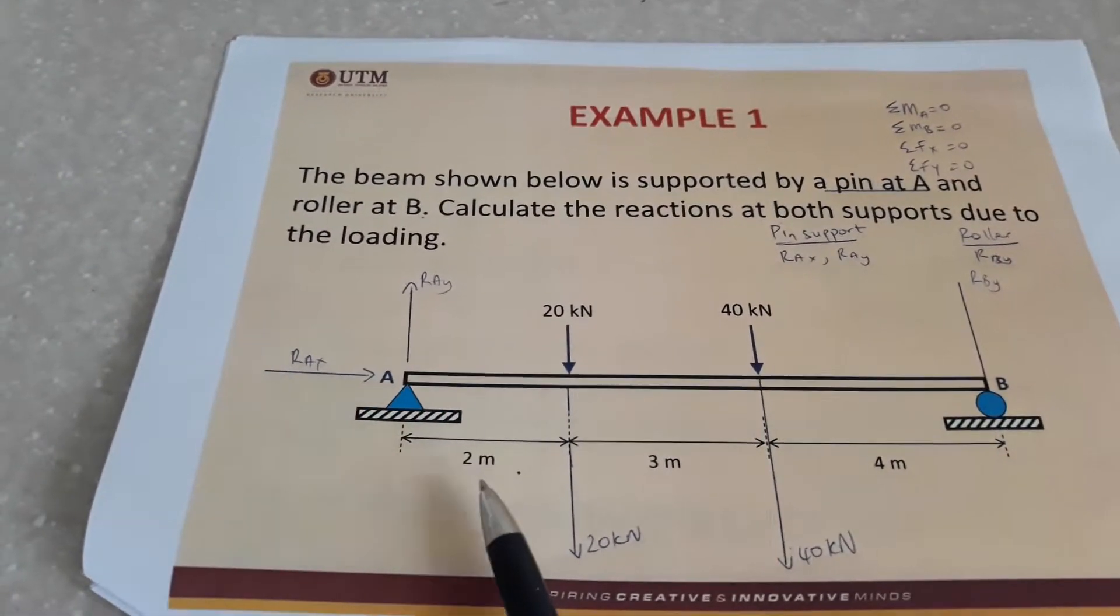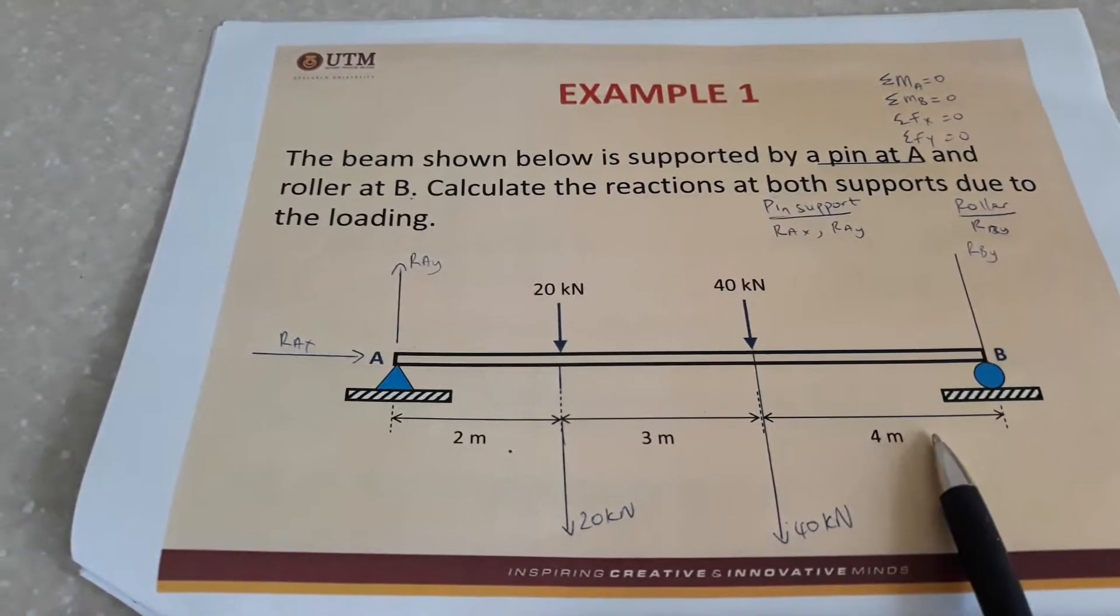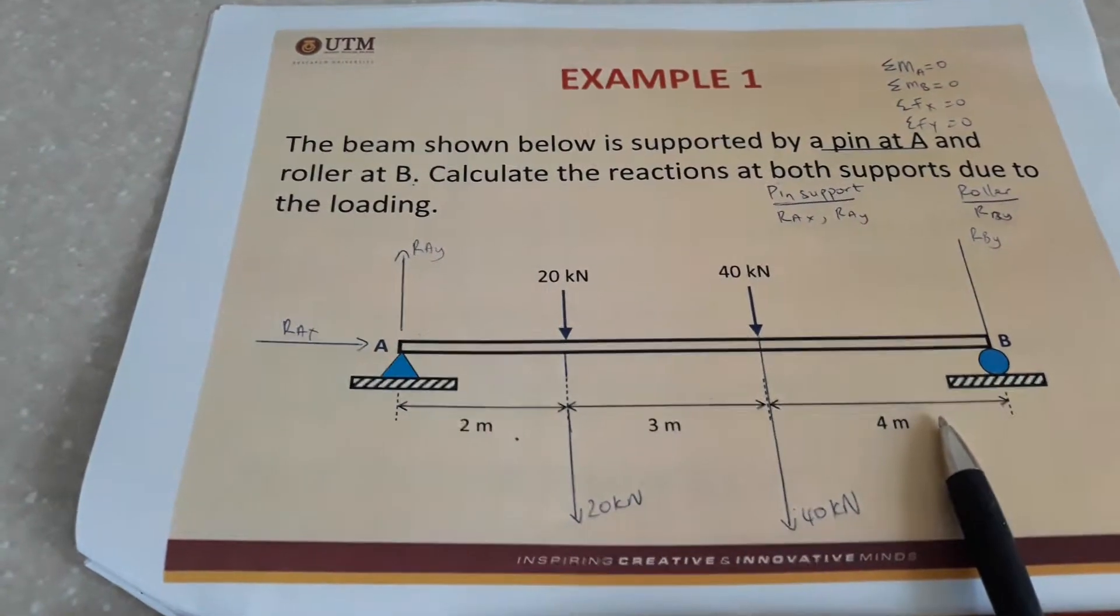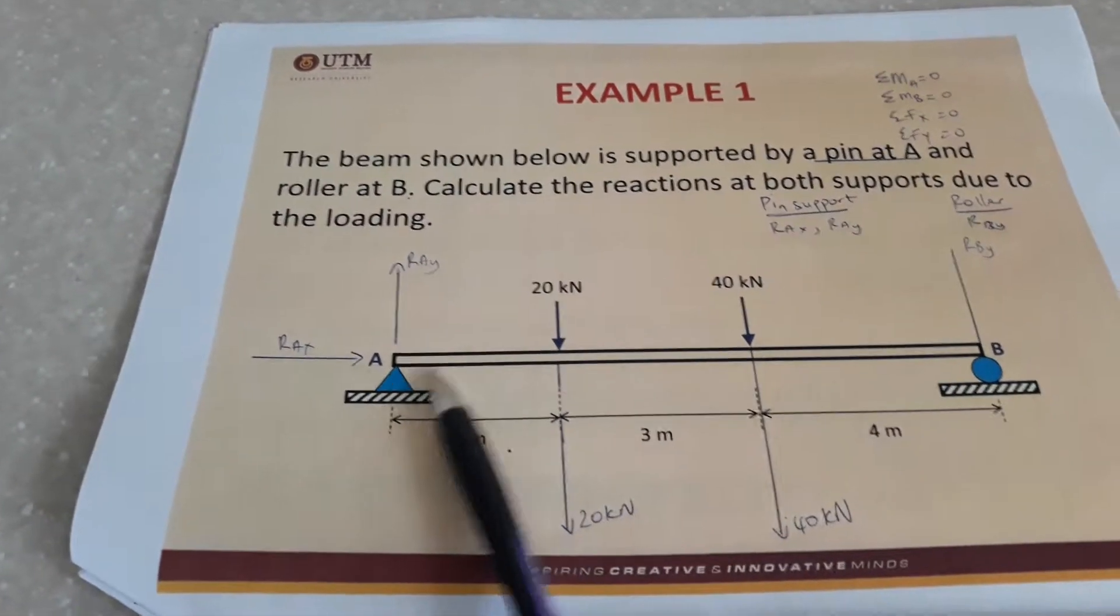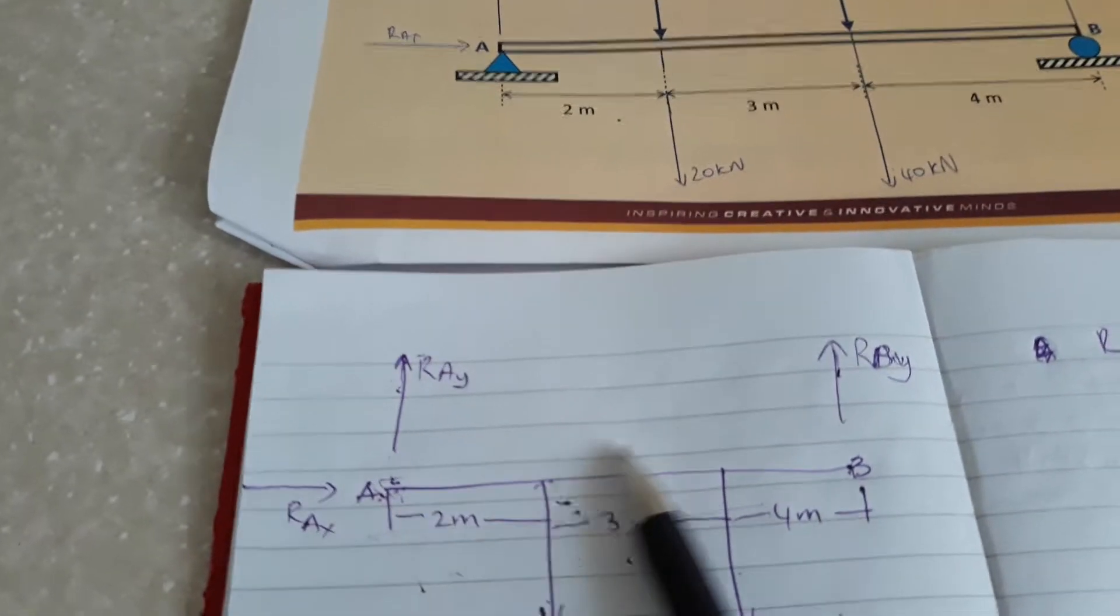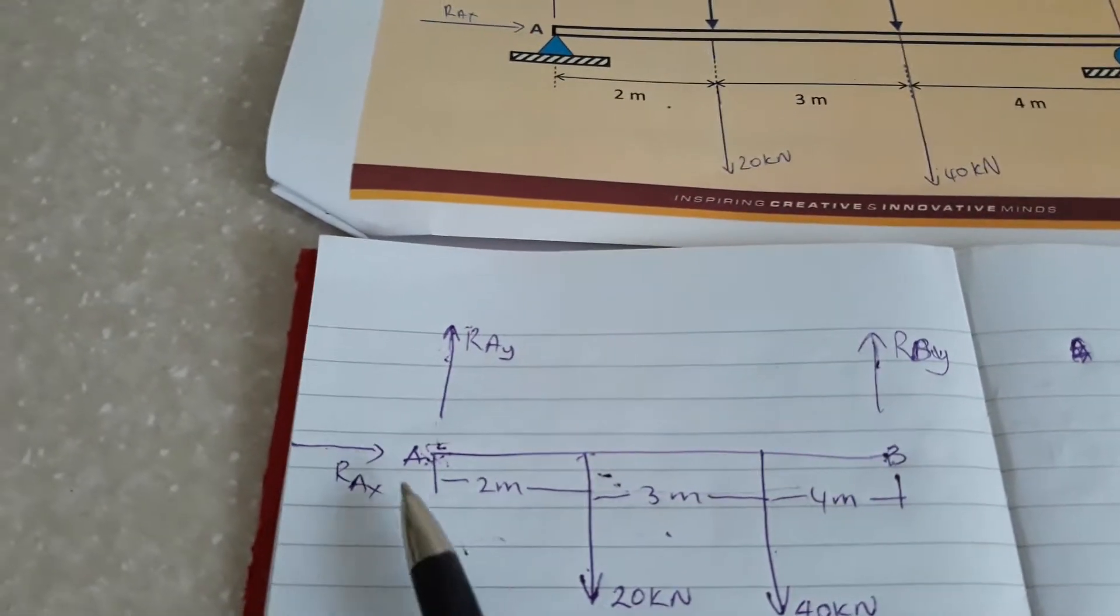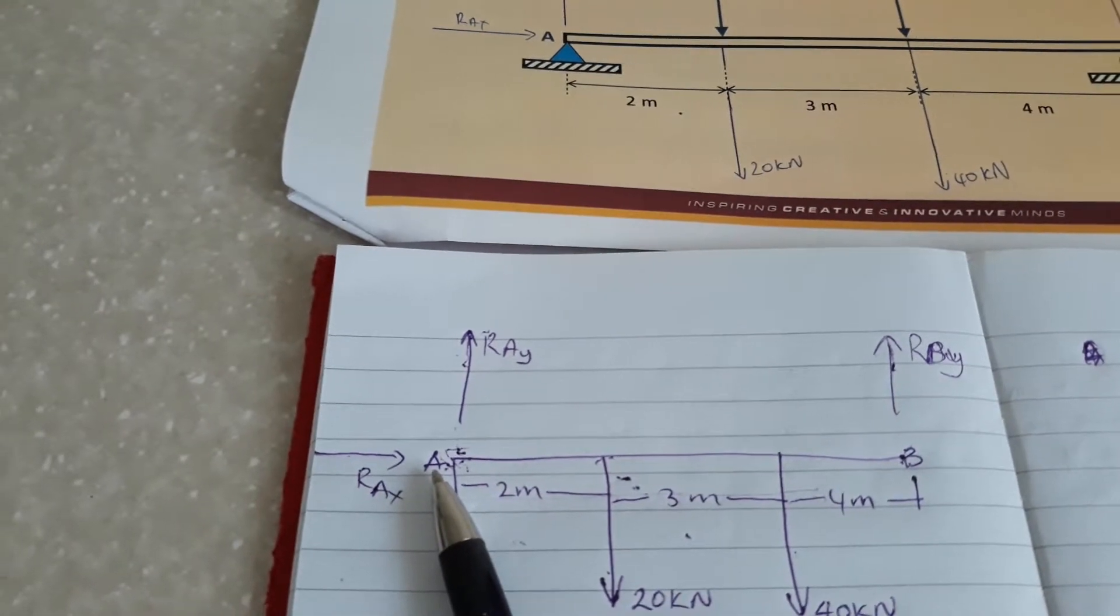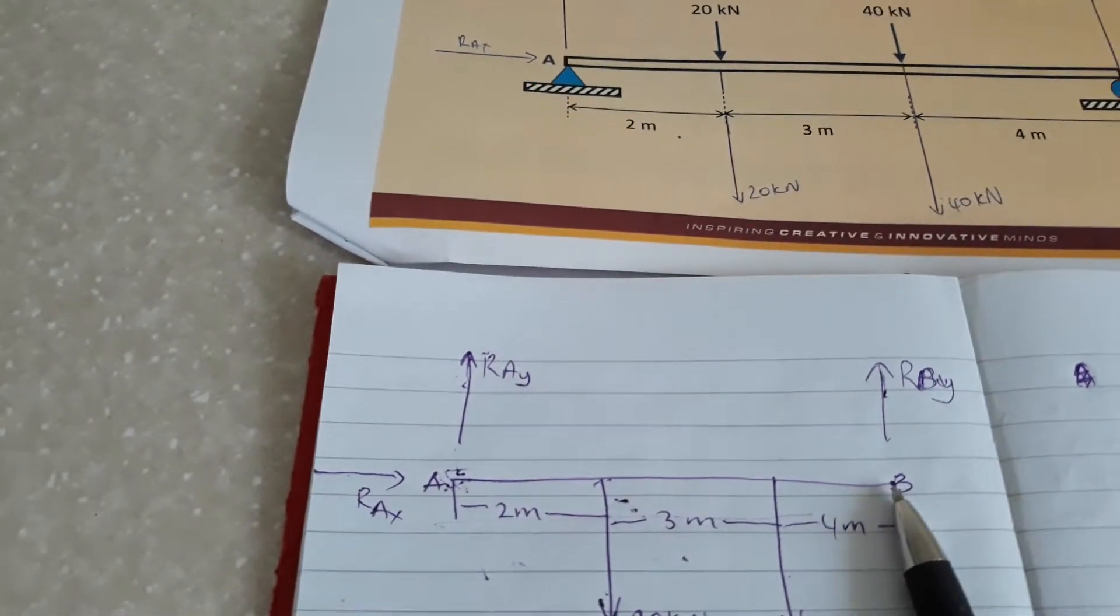The first thing you have to do when you have a question like this is to draw a free body diagram. With a free body diagram we represent the beam with a straight line, just as I've done here. Point A is the pin support, point B is the roller support.